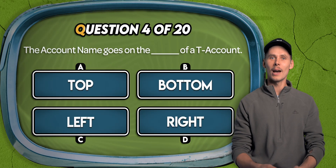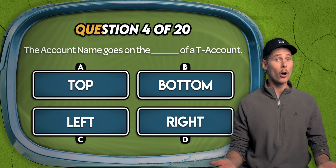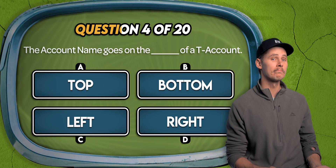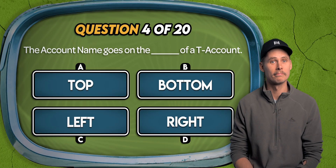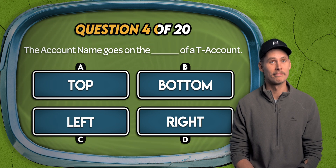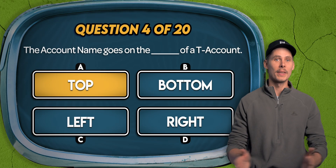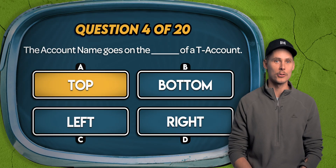Question 4. Where does the account name go on a T-account? The top, the bottom, the left, or the right? A. The account name is written at the top of a T-account.